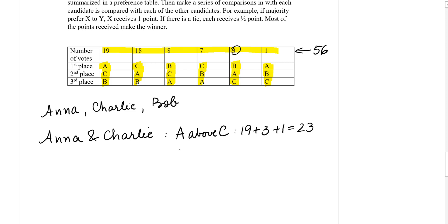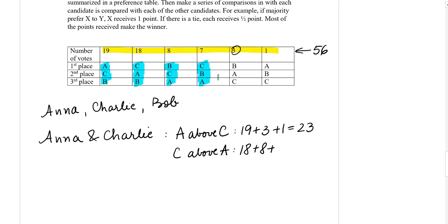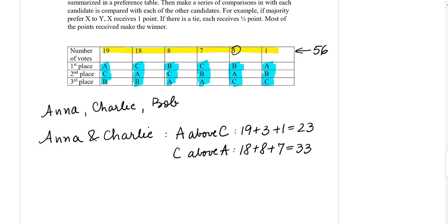Now let's look where Charlie is above Anna. In the second column, Charlie is above Anna, so we get 18 points. In the next column, Charlie is above Anna — plus 8. Then plus 7, and Charlie is above Anna in the remaining columns as well. Adding these up: 18 + 8 + 7 = 33. So Charlie wins this comparison with 33 points versus Anna's 23, and Charlie receives one point.